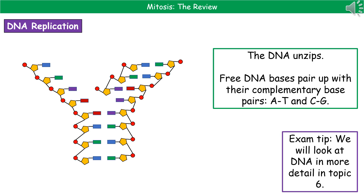For our DNA to actually replicate, it's going to have to unzip first. We've got two strands that are opened up, and then free DNA bases pair up with their complementary base pairs — A with T, and C with G — to form two identical strands.